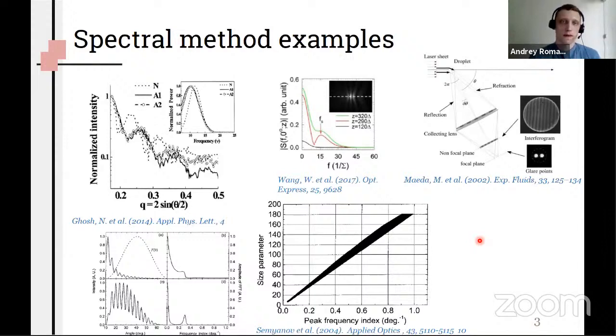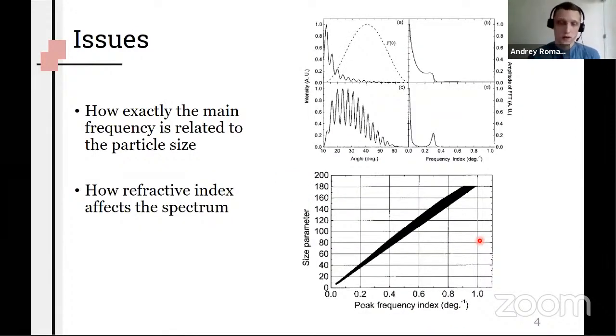Existing explanations are mostly qualitative and related to diffraction theory existing for spheres, but there are works which implement this method for non-spheres as well. So here we're going to answer two main questions: what is spectrum and how particle characteristics affect this spectrum.